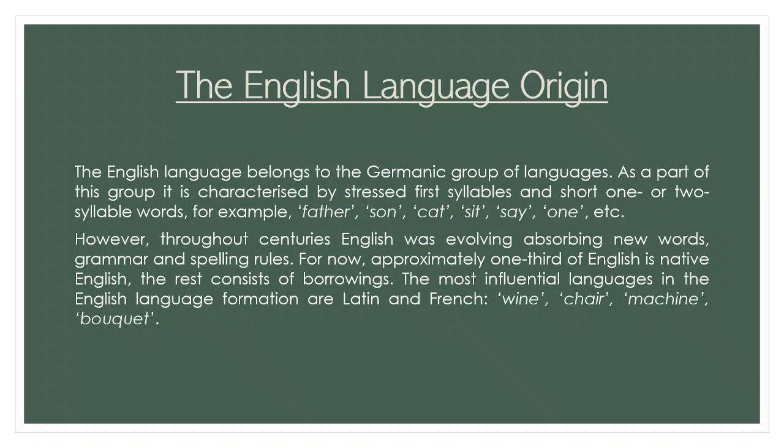And stressed first syllables — for example, in the words 'mother' and 'father'. However, throughout centuries, English was evolving, absorbing new words, grammar and spelling rules. For now, approximately one-third of English is native English. The rest consists of borrowings. The most influential languages in the English language formation are Latin and French. For example: wine, chair, machine, bouquet.